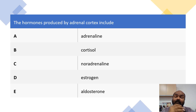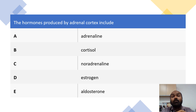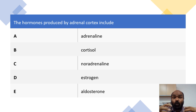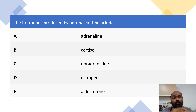Next we move to the middle layer, which is zona fasciculata. The name is derived from the term 'fascicles,' and fascicles mean bundles. Zona fasciculata produces cortisol, also known as glucocorticoids. Just as in zona glomerulosa, zona fasciculata also produces a range of glucocorticoids, but one of the major glucocorticoids is cortisol. Cortisol exerts its effect on sugar metabolism — basically preparing our body for stress and altering sugar metabolism. We will discuss the functions of cortisol in a separate future lecture.